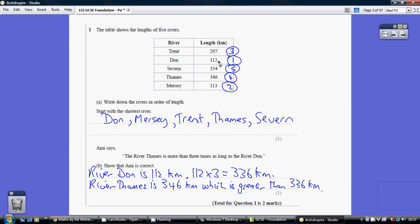Well, obviously this is the smallest number, then this one, then the Trent, then the Thames, and then the Severn. So I suggest you just sort of number them here, just so you make sure you're absolutely sure. Smallest to biggest.